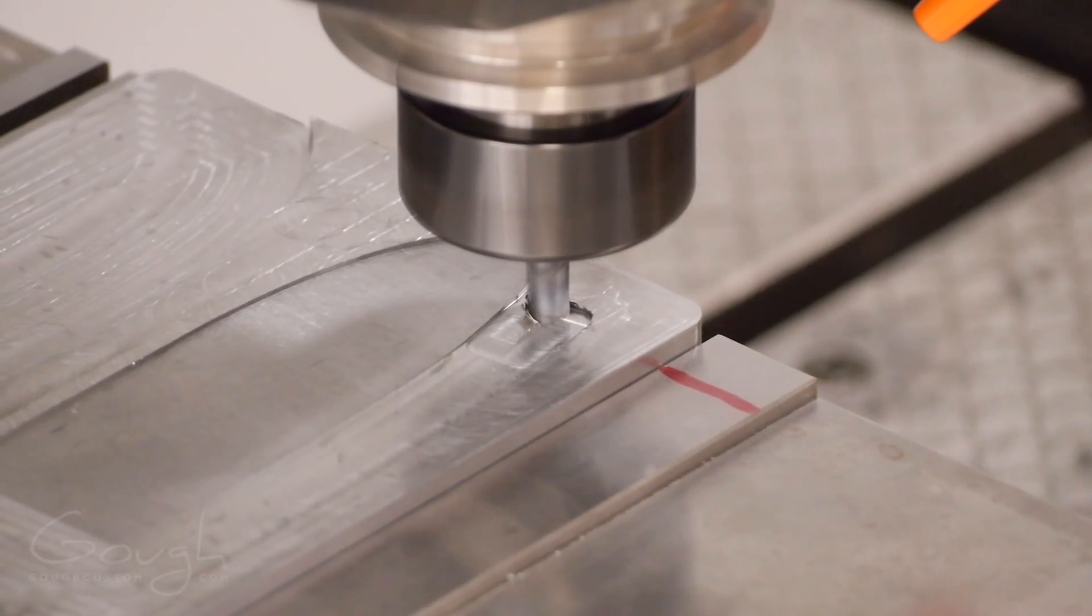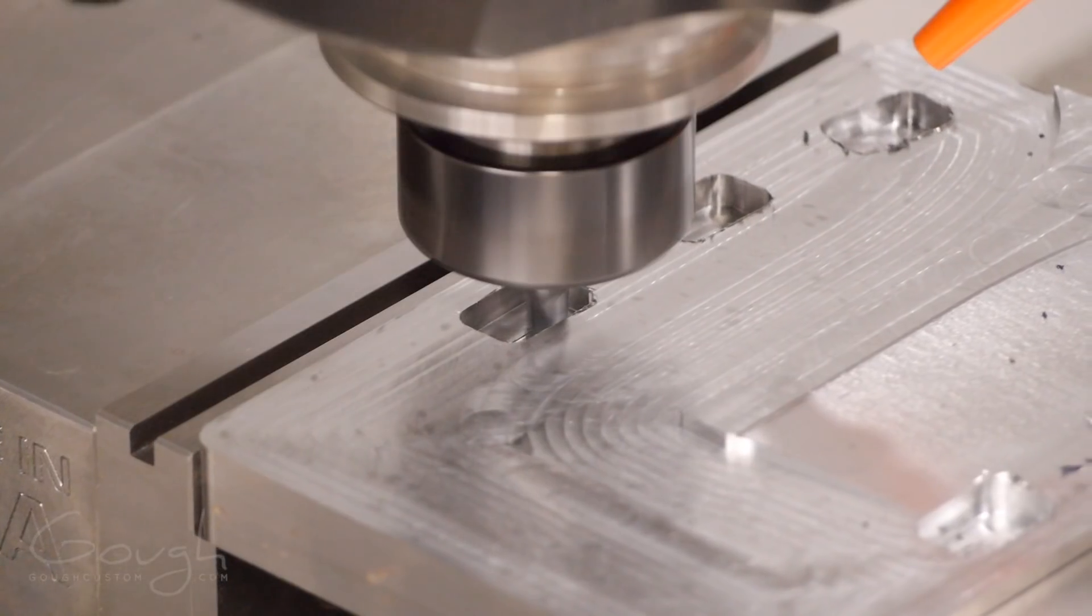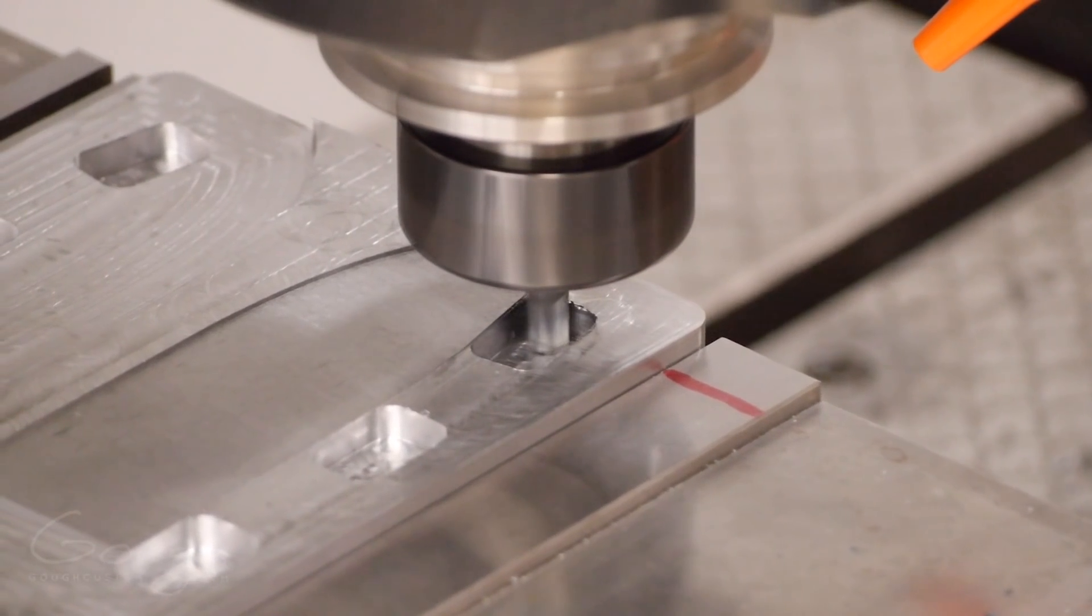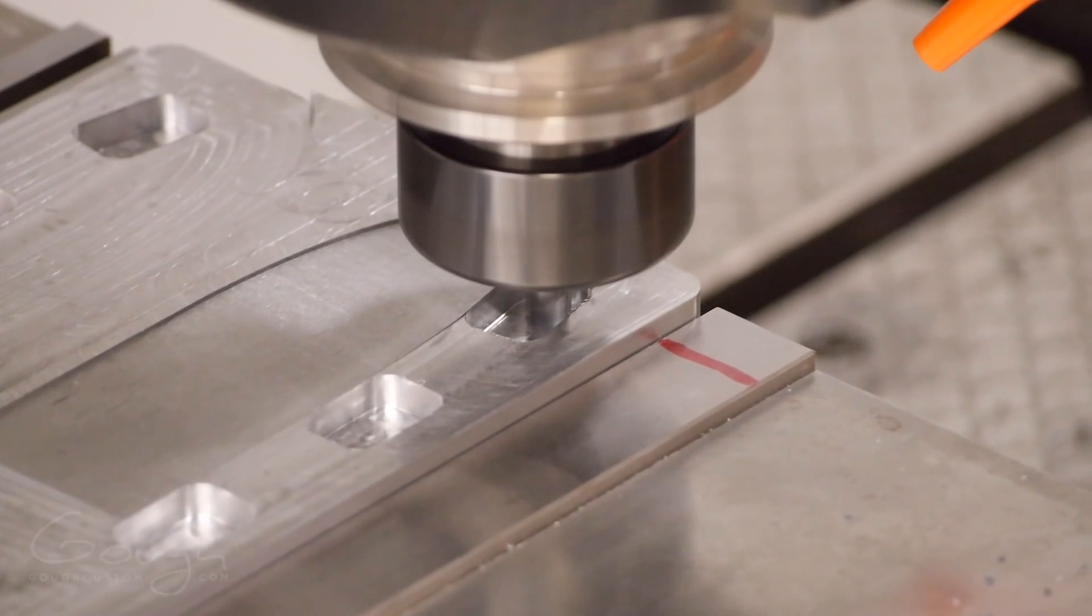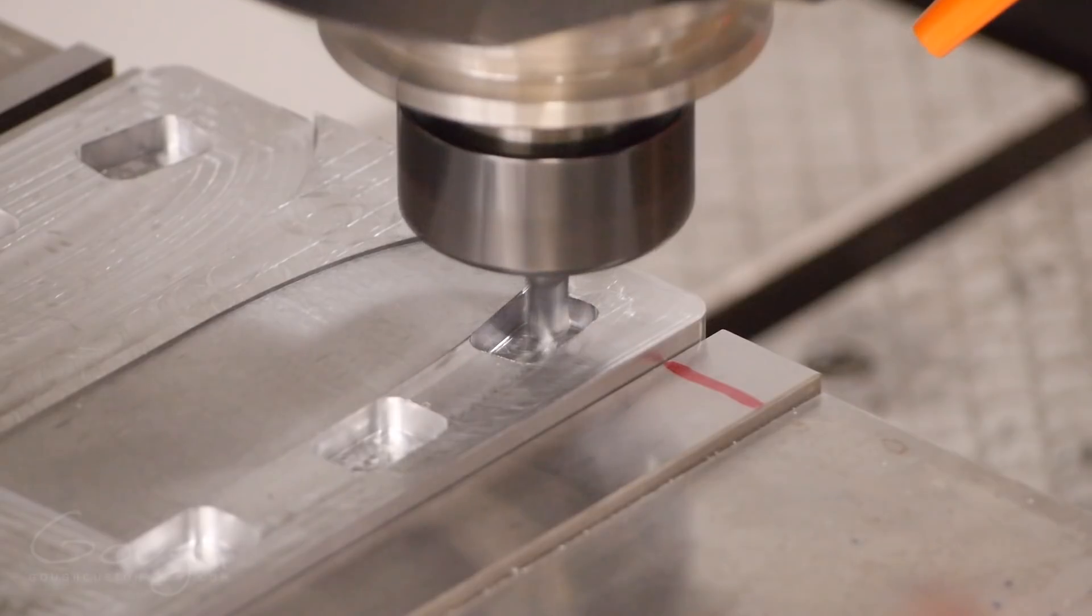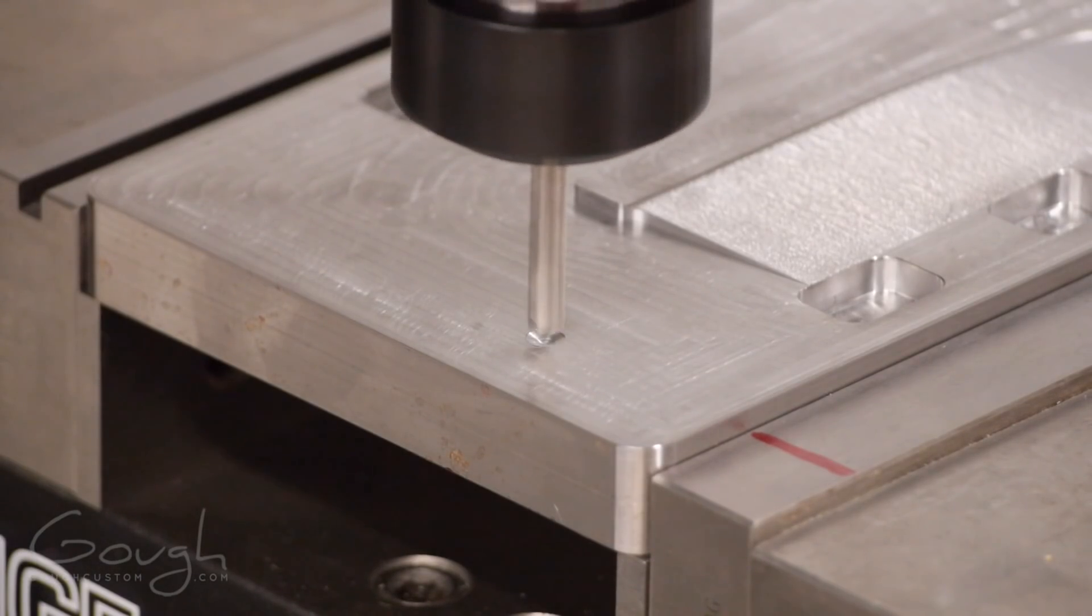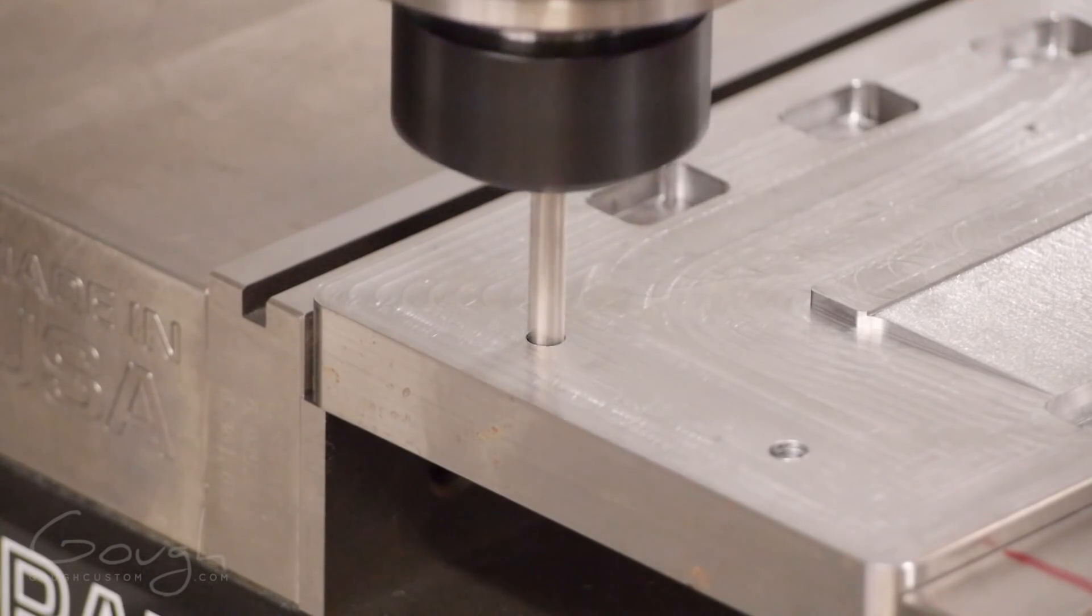Next up is a little stubby quarter inch diameter four flute end mill. I'm using this to machine the pockets that will hold the pitbull clamps. Whenever I'm machining fixtures or one-offs I tend to run fairly conservatively. There's nothing worse than breaking a tool. If these were production parts then I would be running this much more aggressively. Now I need to drill the holes for the quarter twenty threads that I'll put in a bit later. These will allow me to bolt down the knife blades.